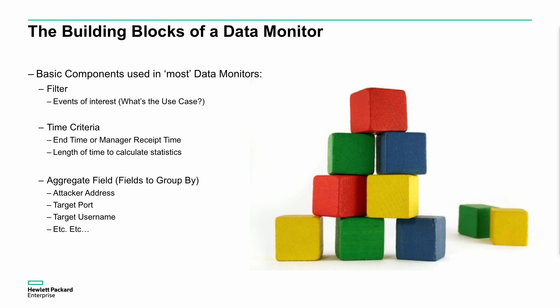What's the building blocks of a data monitor? That's probably the first place to start. When we're creating a data monitor, the first thing we need to do is create the filter. What's the specific set of events that we want to match so we can see those events? Next, we need to define the time criteria that we want to use. Remember, we talked about the timestamps available in the first event. We talked about the different fields that we could use here, whether it be end time or manager receipt time. So just consider what we're looking for. Is it the time of generation or the time that we receive this?